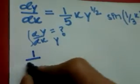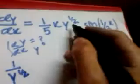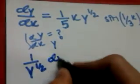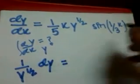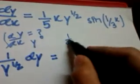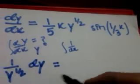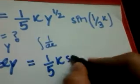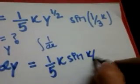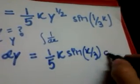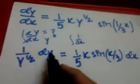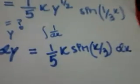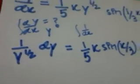dy and dx must be in the numerators — because if they're at the denominator, how will we integrate them? So this is 1 over 5, x, sine of x over 3, and dx. So the first step: put y and dy on one side, put all the x and dx on the other side. Take care — dy and dx must be in the numerators. Now let's just integrate.